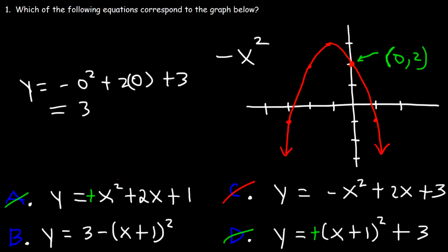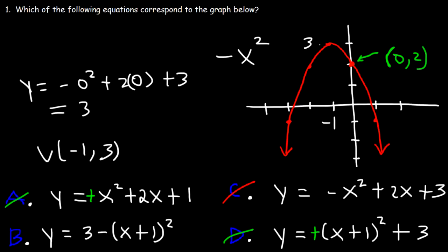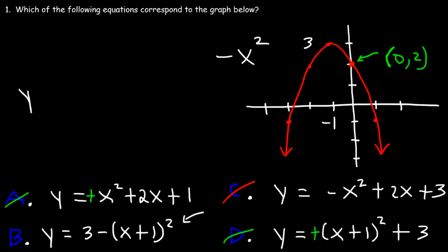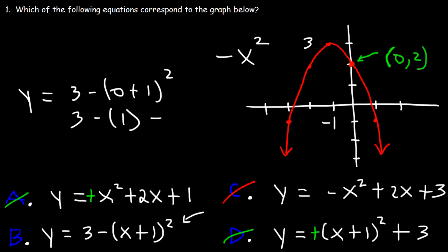Looking at B, the graph is shifted one unit to the left and up 3, so the vertex is (−1, 3). Let's confirm the y-intercept: plug in x = 0, giving 3 minus (0+1) squared. Zero plus 1 is 1, 1 squared is 1, and 3 minus 1 is 2. So this gives a y-intercept of 2, confirming answer choice B.